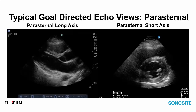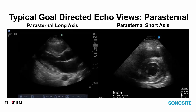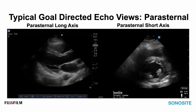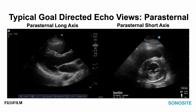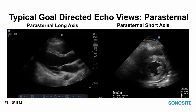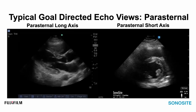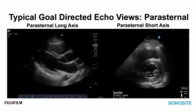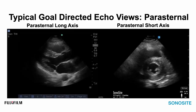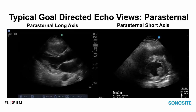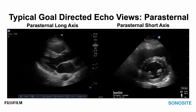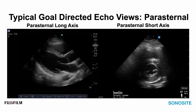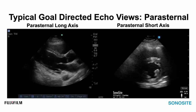Which views should you entertain? The common goal-directed echo views will be reviewed here. The first is the parasternal long axis, obtained in the parasternal space, and its sibling view is the parasternal short axis at the papillary muscle level. These views are frequently acquired first in your exam protocol, though patient and clinician factors may vary that approach. Sometimes these windows are not available, which is why we'll emphasize the subcostal view. These views provide an excellent overview of the pericardium, LV function, some glimpse at the RV and septal kinetics, and a global assessment of the mitral and aortic valves.